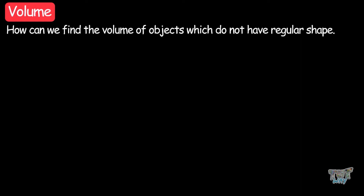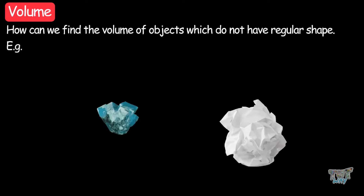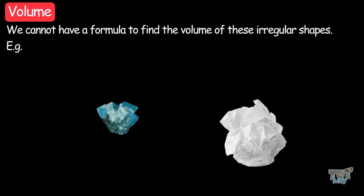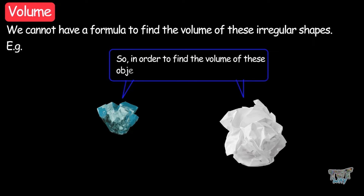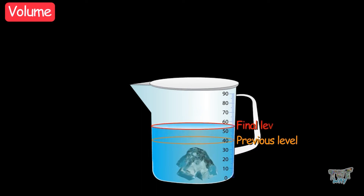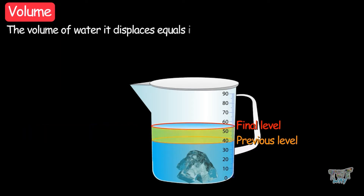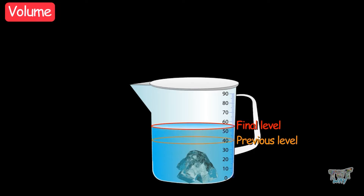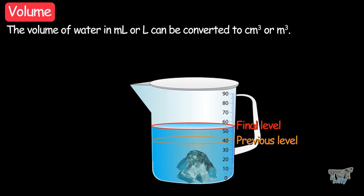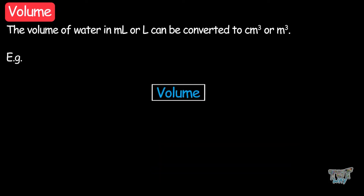But how can we find the volume of objects that have irregular shapes? We cannot use a formula to find the volume of these irregular shapes. So in order to find the volume of these objects, we use the displacement method. An object with an irregular shape can be dipped in a container filled with water or any other liquid, and then we measure the amount of water it displaces. The volume of water it displaces is equal to its volume.